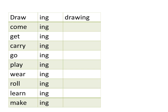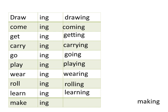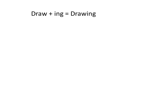Practice examples: drawing, coming, getting — the consonant 't' is doubled in getting — carrying, going, playing, wearing, rolling, learning. Making: the word make has the 'e' dropped and -ing added: M-A-K-I-N-G, making.